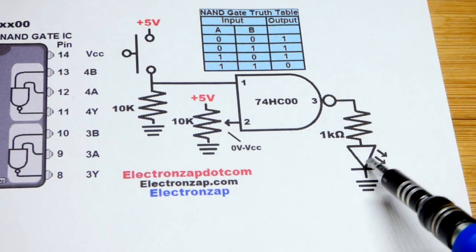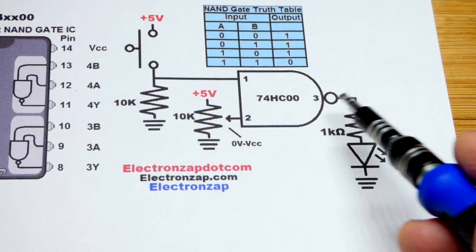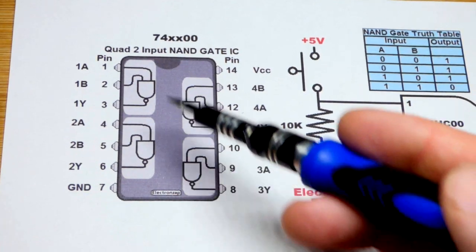So that'll give us 3 milliamps. We got 5 volts. The LED's going to drop about 2, and so we'll have 3 volts across the resistor for 3 milliamps of current. Stuff we covered before.